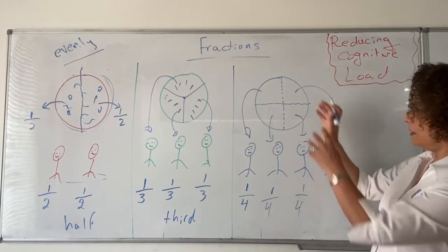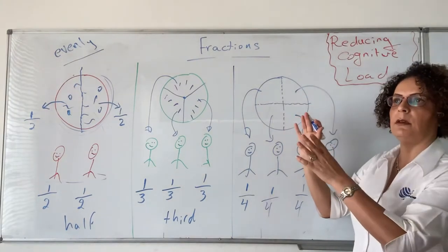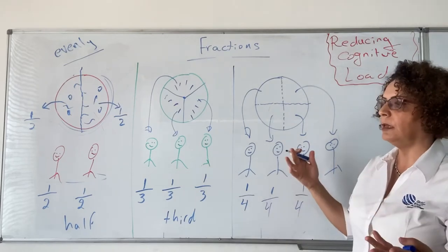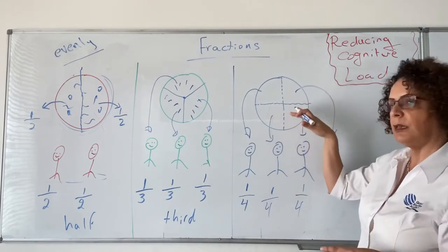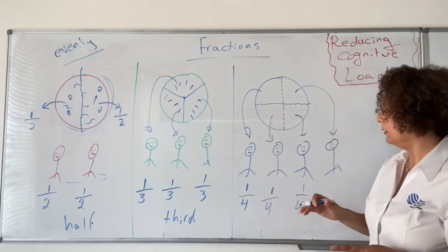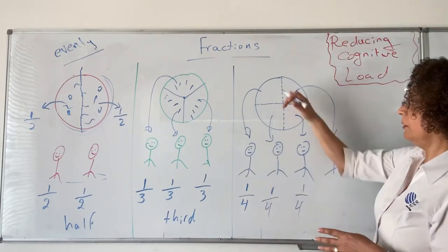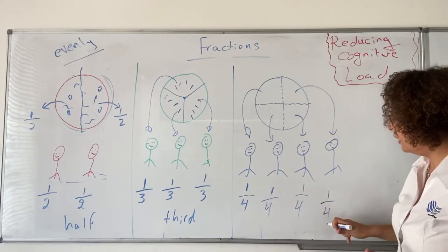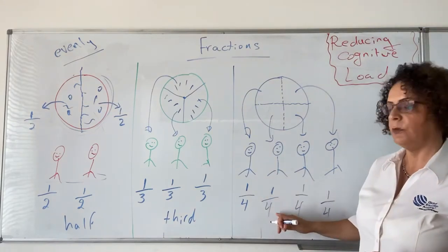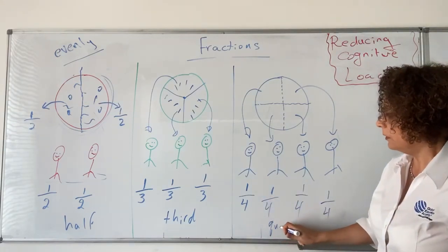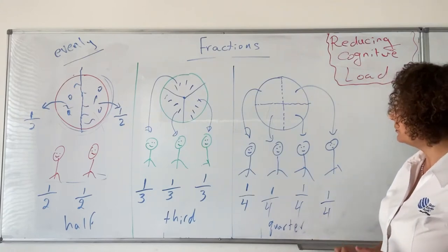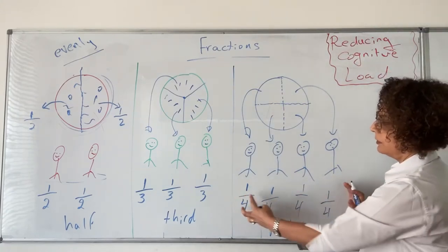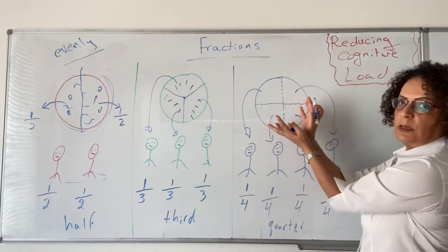Remember, the pizzas we're talking about today are not the ones we buy from the shop where they are already cut. They are the ones we make at home and cut as we need. So when you have four people, you make four equal slices and each one will get one out of four. That's what we call a quarter. The four quarters together will make the whole pizza.